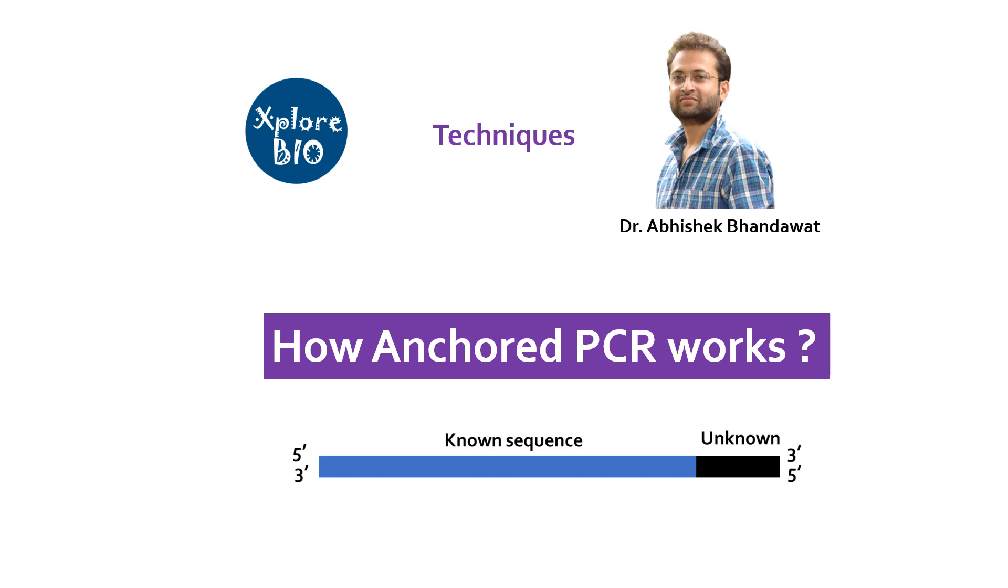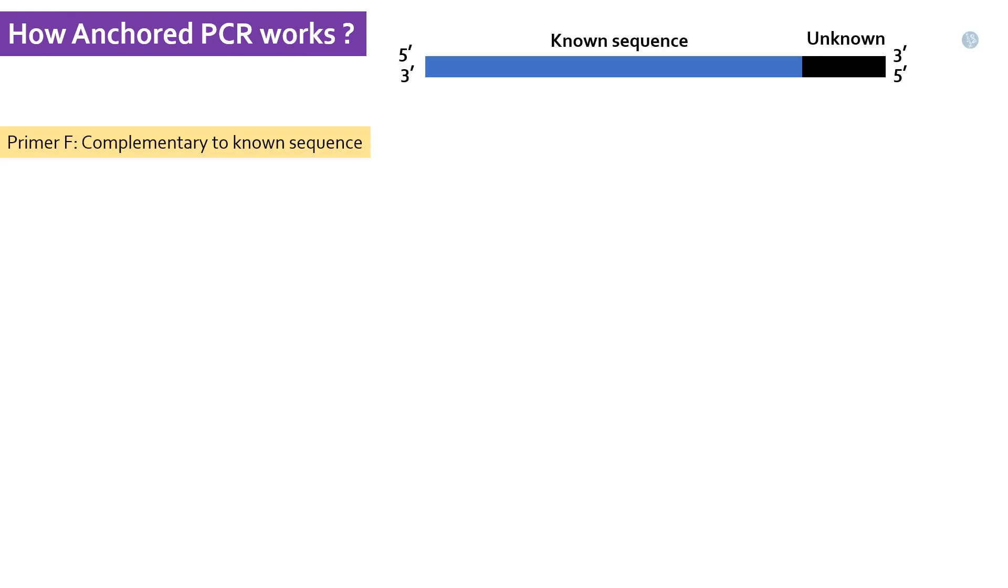Now let's quickly learn how Anchored PCR works. In Anchored PCR, you design two primers for a particular region of interest. The first primer is complementary to the known region, which is also called a sequence-specific primer, while the second primer is the anchored primer about which I will talk in a moment.